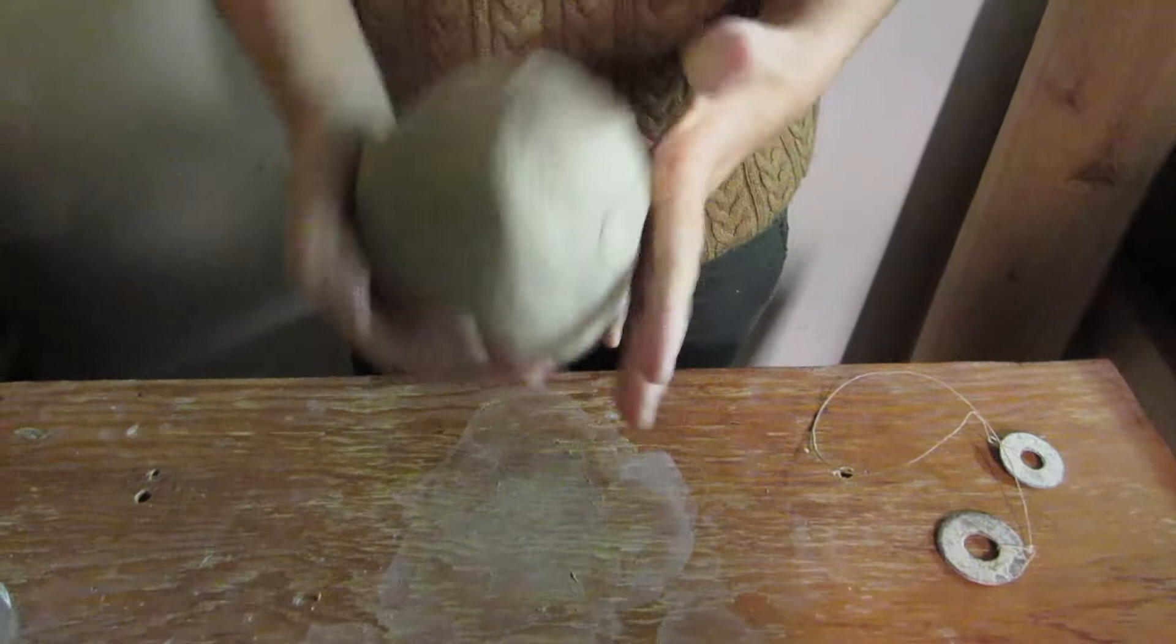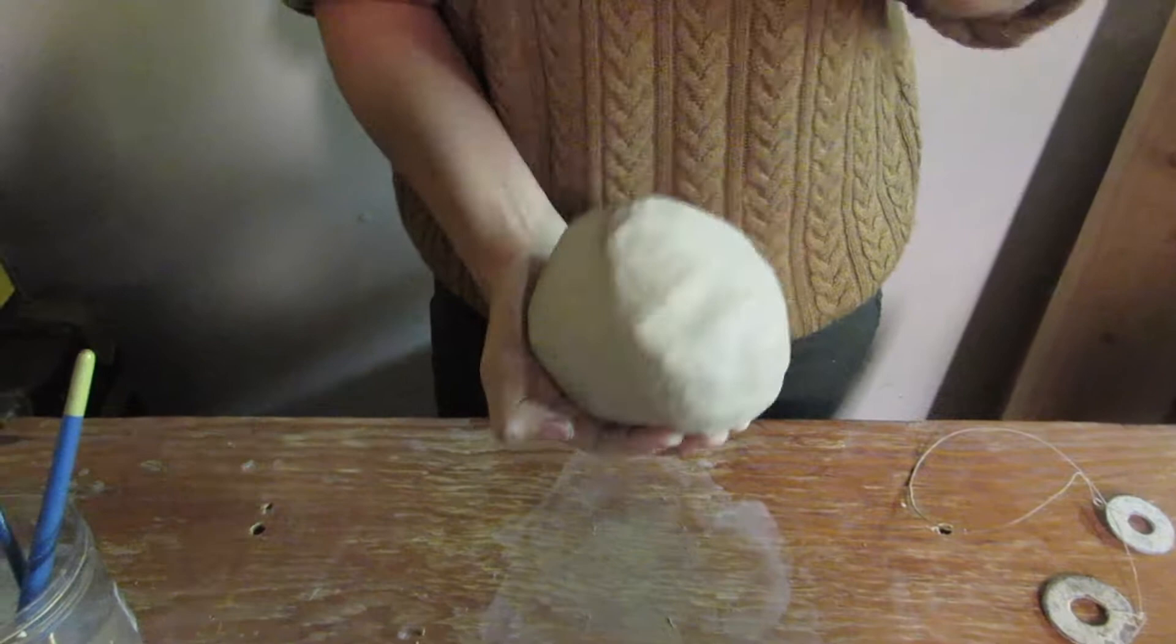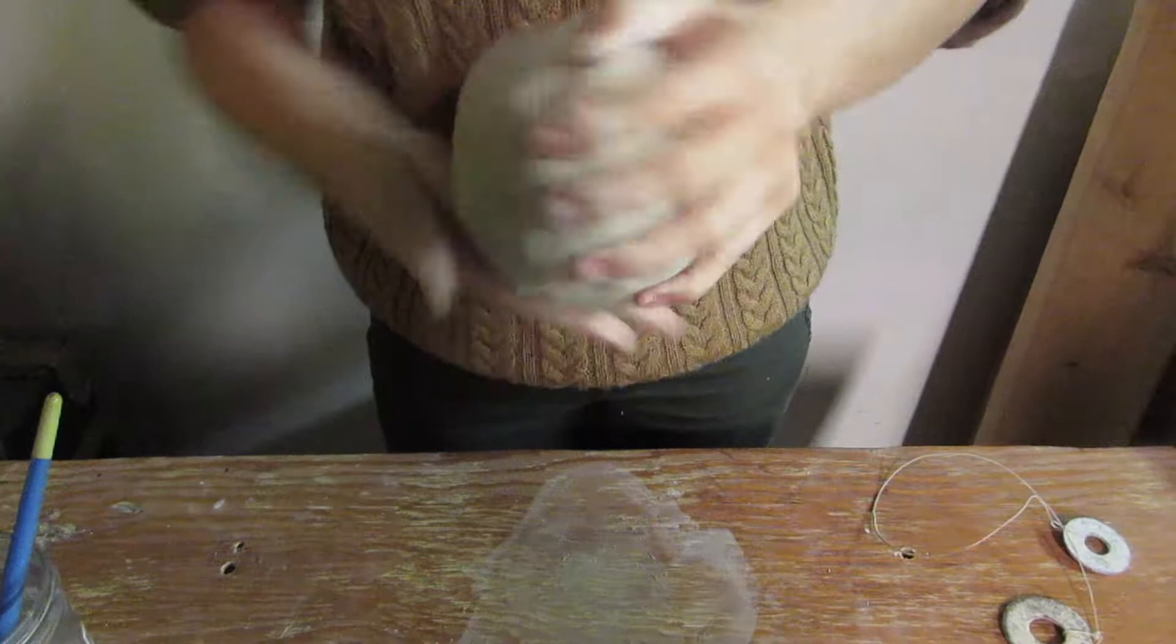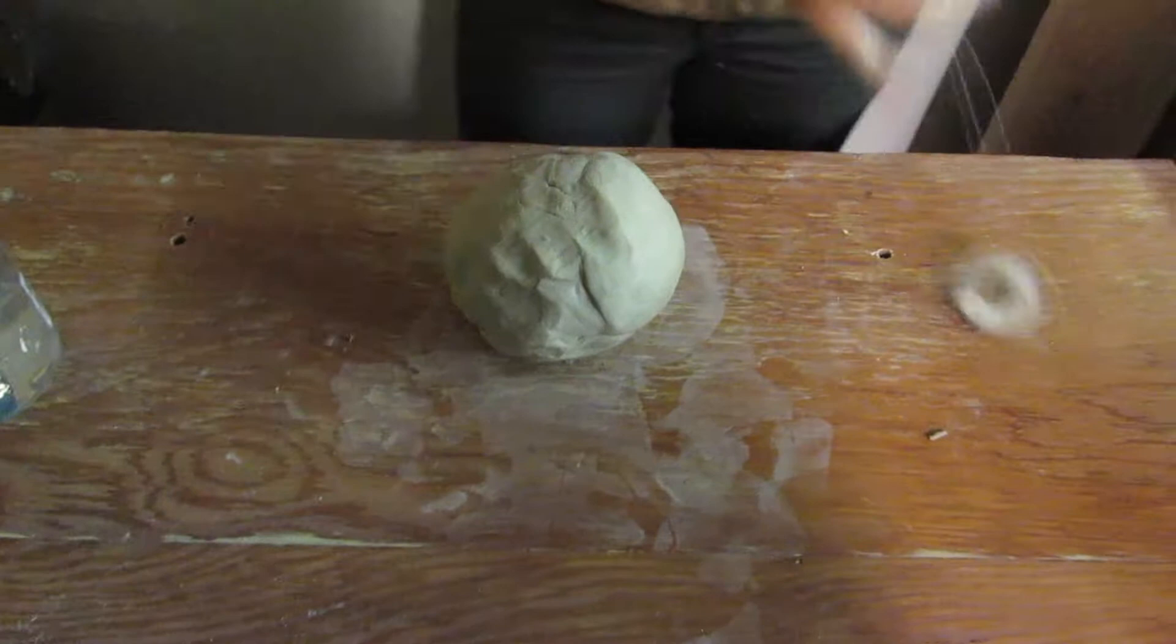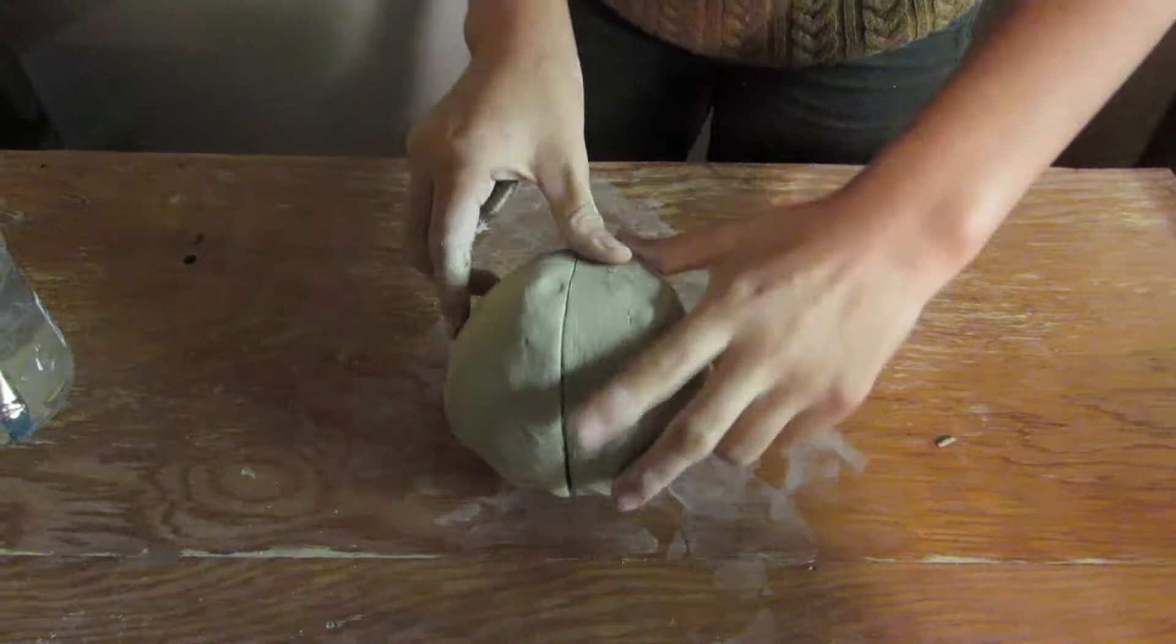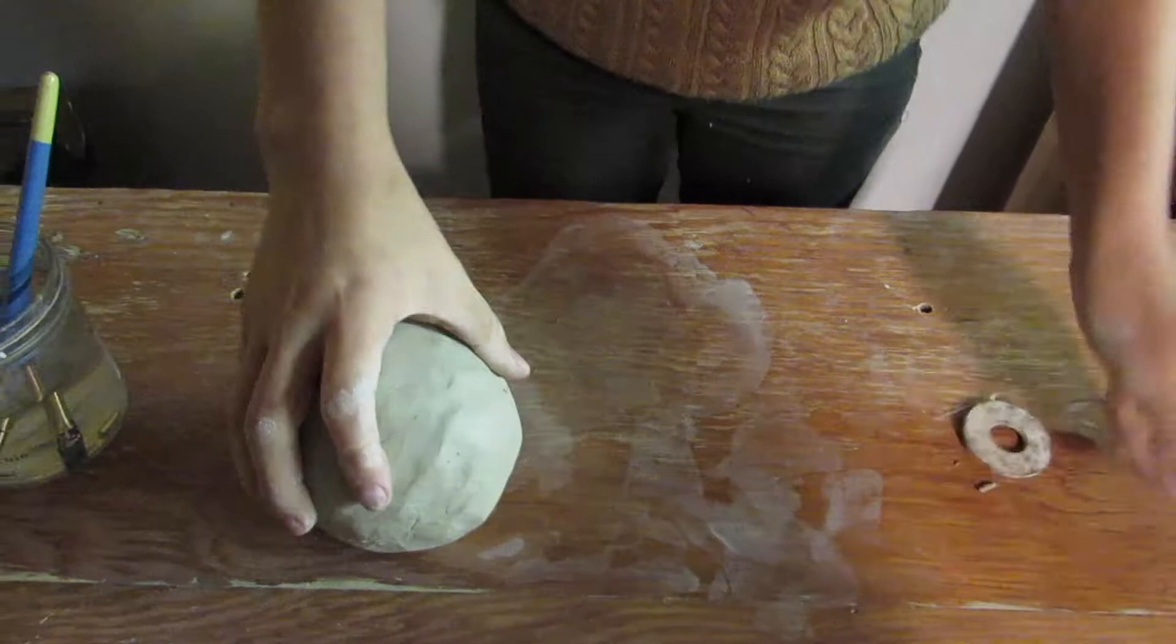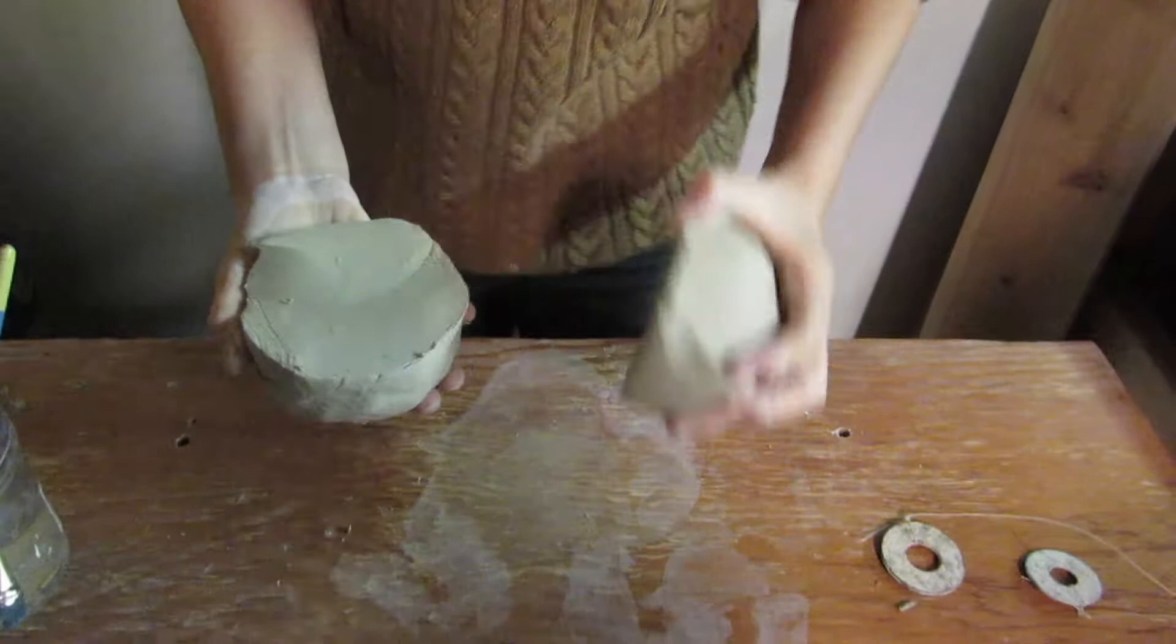After kneading the clay for the second time, you're going to pat it with your palm to shape it as a ball. You can use a paddle, but it's better with your palm because you can shape it better. And after you form it in a ball, you're going to cut it in half equally. Kind of equally. Then after that, you're going to roll them into their own individual balls.